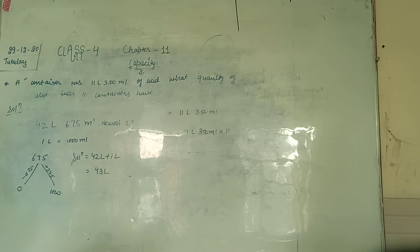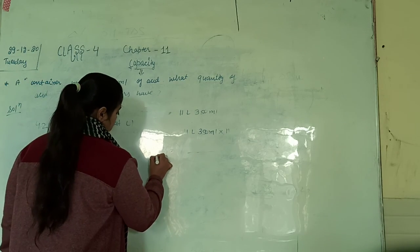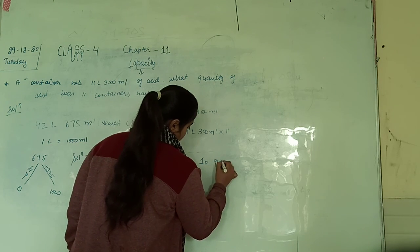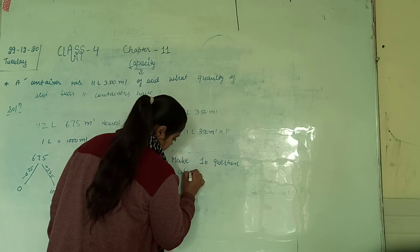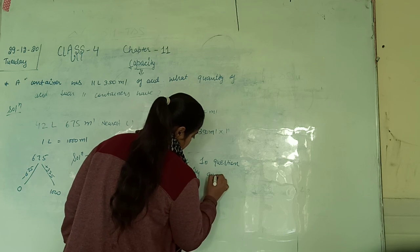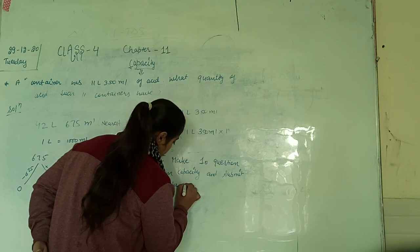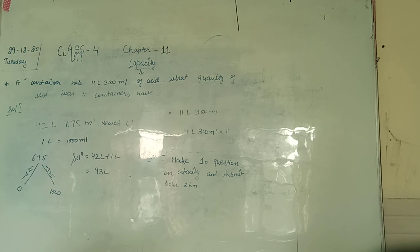This was our today's topic — chapter 11, capacity. If anyone has any problem with this topic, you can comment and ask. For today's homework: make 10 questions on capacity and submit before 2 PM. Make sure the questions are not from your book — you have to make 10 new questions on your own.